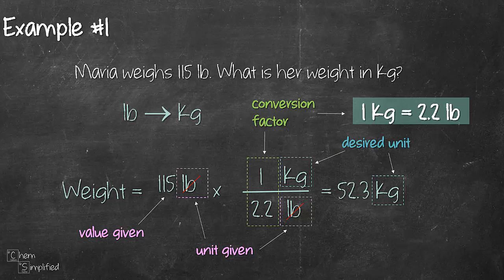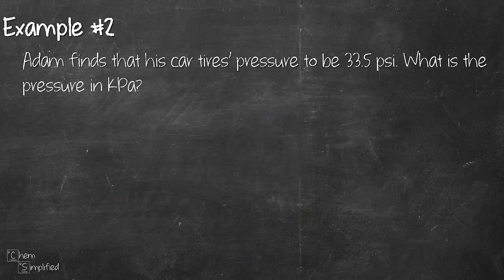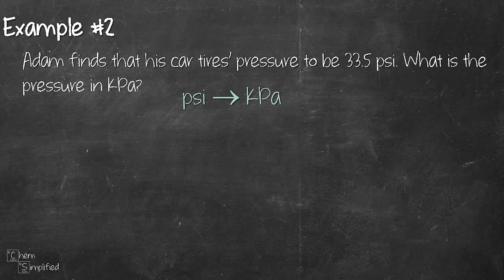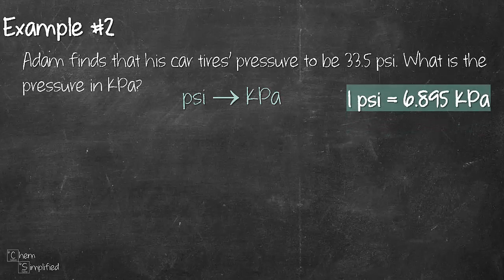Let's try using this same method on a second example. The question is asking us to convert from PSI to kPa. Both are units for pressure and if we look it up we'll find that 1 PSI is equals to 6.895 kilopascal.